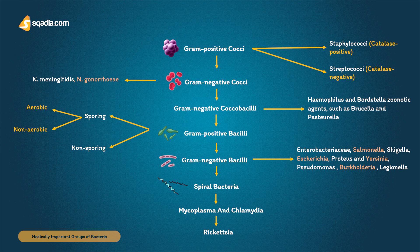Then we have spiral bacteria. These include the small gastrointestinal pathogens: Helicobacter, which colonizes the stomach leading to gastric and duodenal ulcers, and Campylobacter species that cause acute diarrhea, an example being Campylobacter saprophyticus.